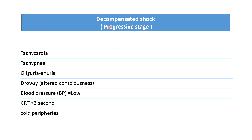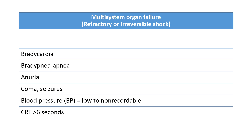In decompensated shock, also called progressive stage, with tachycardia and tachypnea, the patient will develop oliguria or anuria and the conscious level will be further deteriorated. The patient will become drowsy, with altered consciousness, or sometimes may go into stupor and coma. BP will fall during decompensated shock. CRT will be more than 3 seconds and peripheries will be cool. Further, if the patient develops MODS — multiple system organ failure, multiple organ dysfunction syndrome — we label it as refractory or irreversible shock. In this condition the patient will develop bradycardia, bradypnea, or apnea.